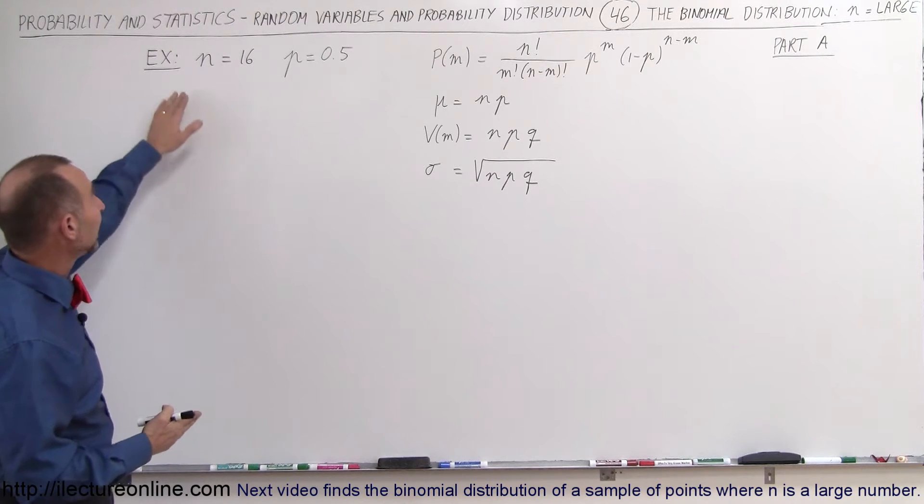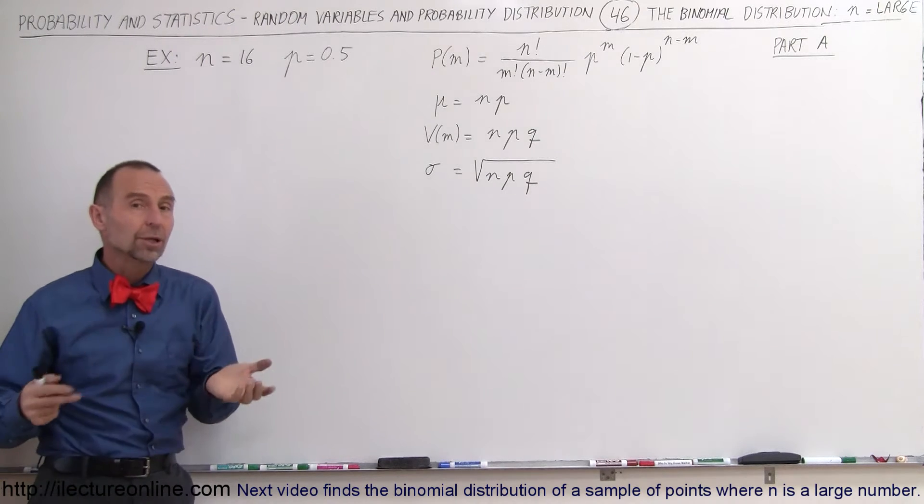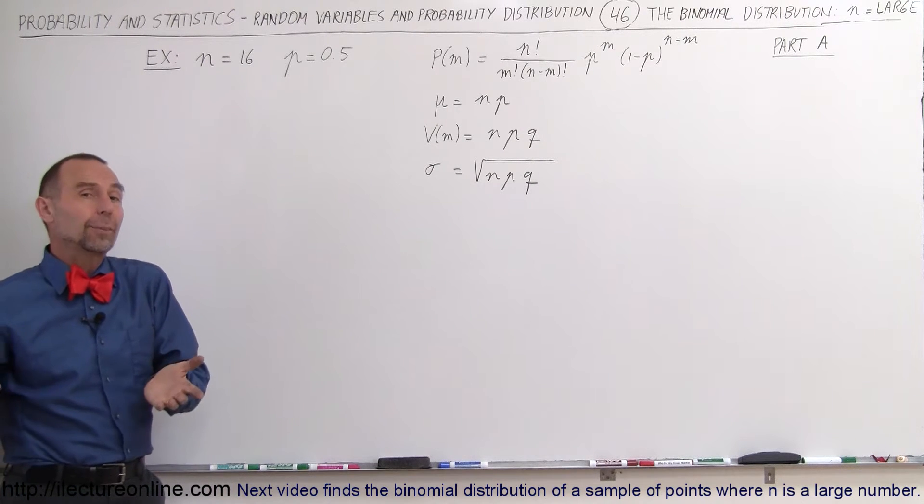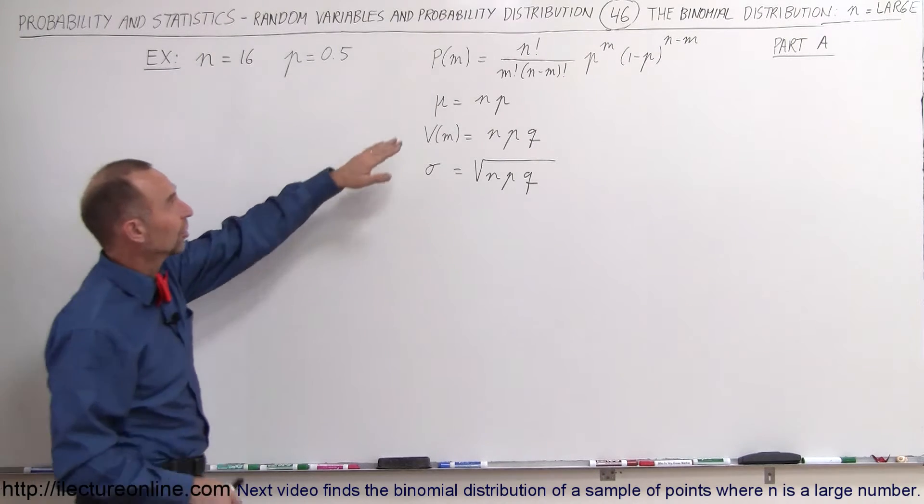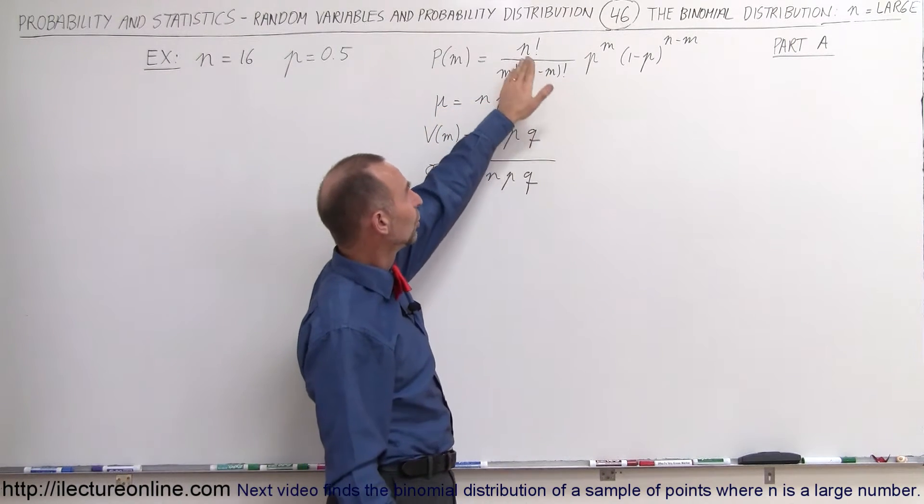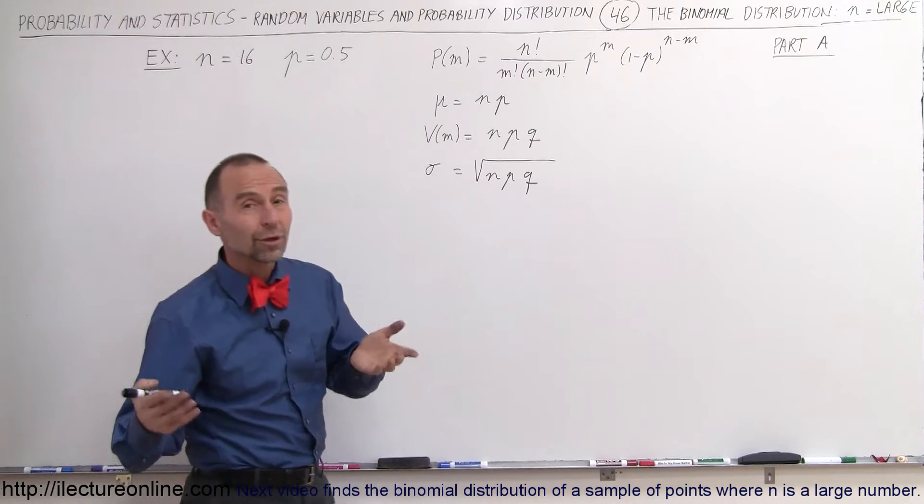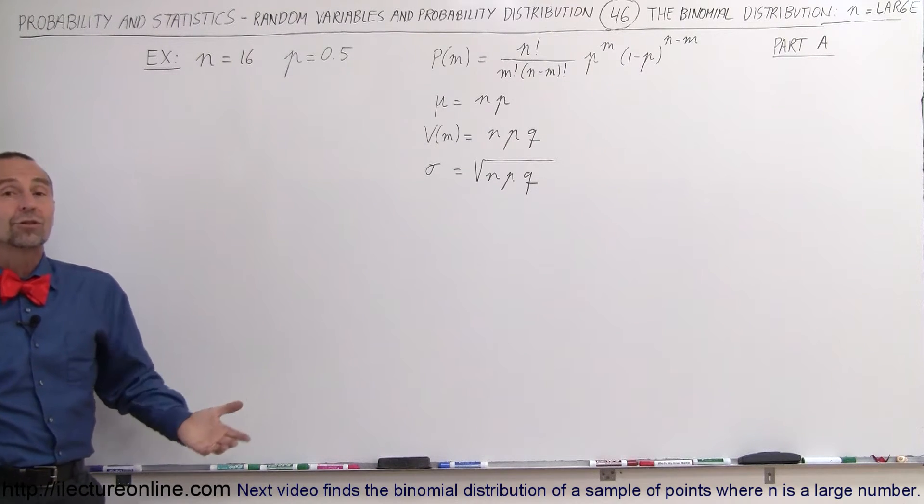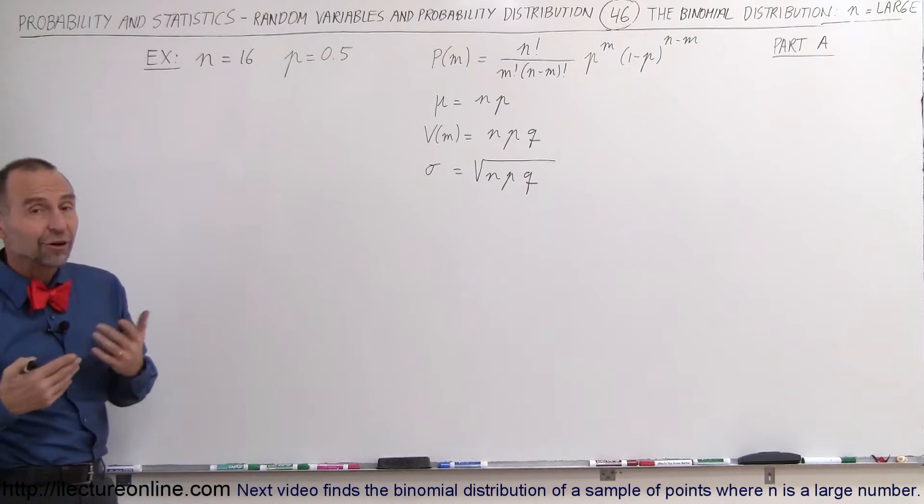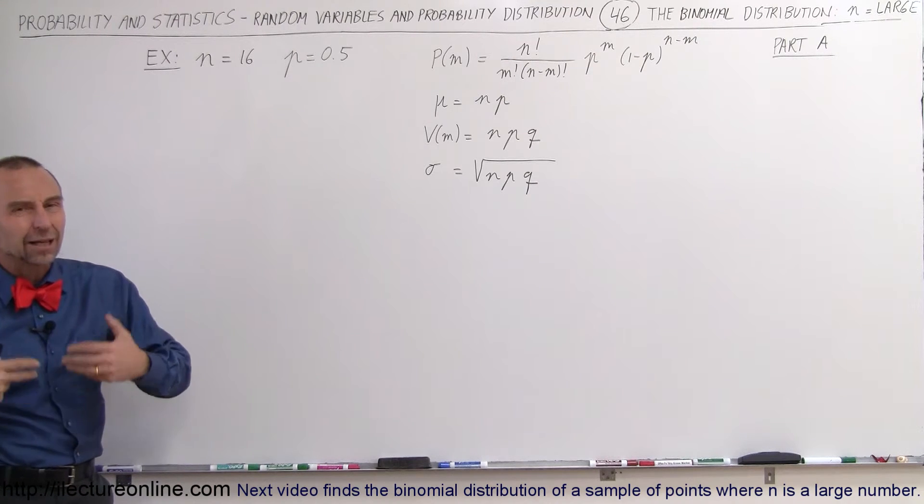We're going to start with an example where n is 16. That's not extremely large. We could easily encounter a problem where n equals a thousand. When n equals a thousand, you start looking at equations like this with a thousand factorial. You know you're in a lot of trouble. You're going to have a really tough time trying to figure out what the binomial distribution looks like for something with very large numbers for n, meaning a lot of trials.